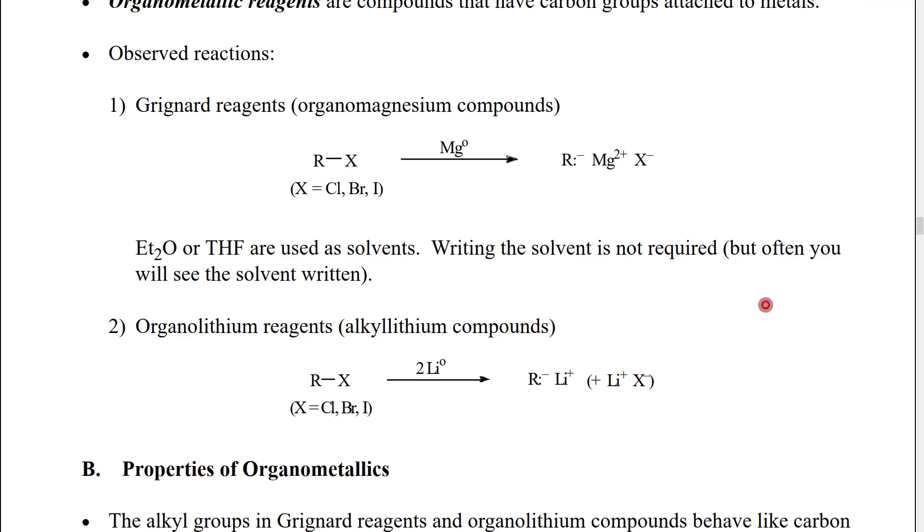Organometallic reagents are compounds that have carbon groups directly attached to metals. The first two widely studied organometallic reagents were the Grignard reagent, discovered by Victor Grignard who won the Nobel Prize for his work, and the organolithium reagent. The Grignard reagent is called an organomagnesium compound because the metal is magnesium metal. It's made by mixing an alkyl halide R-X, where X equals chlorine, bromine, or iodide, with magnesium metal.